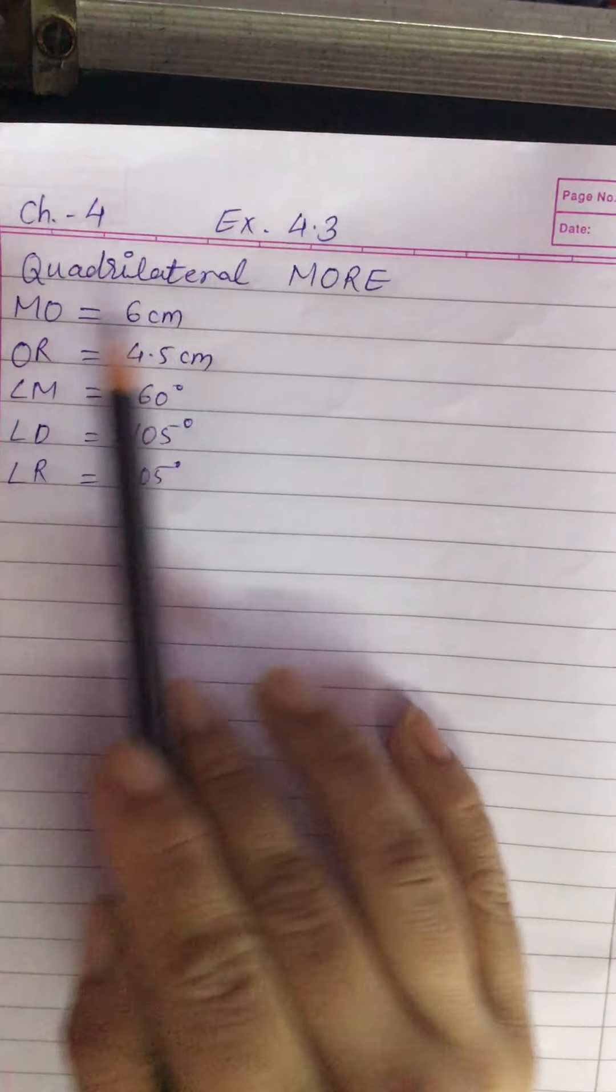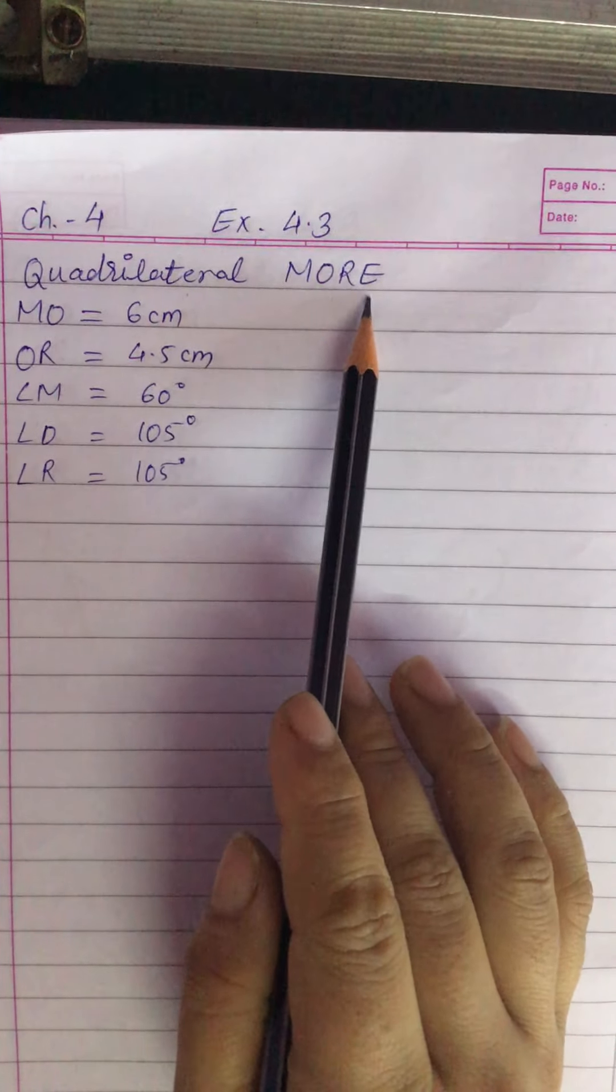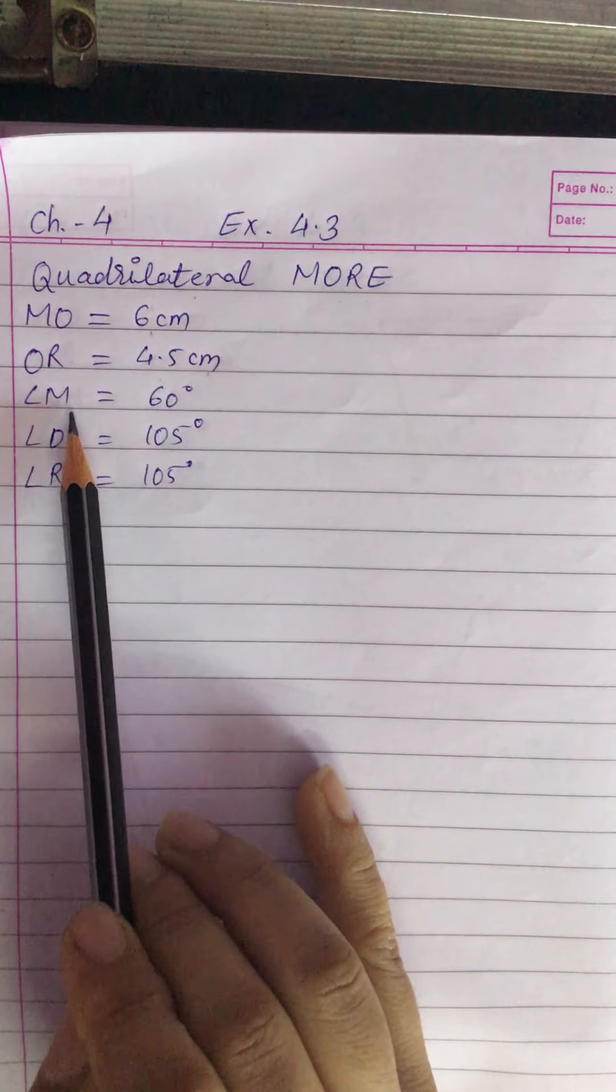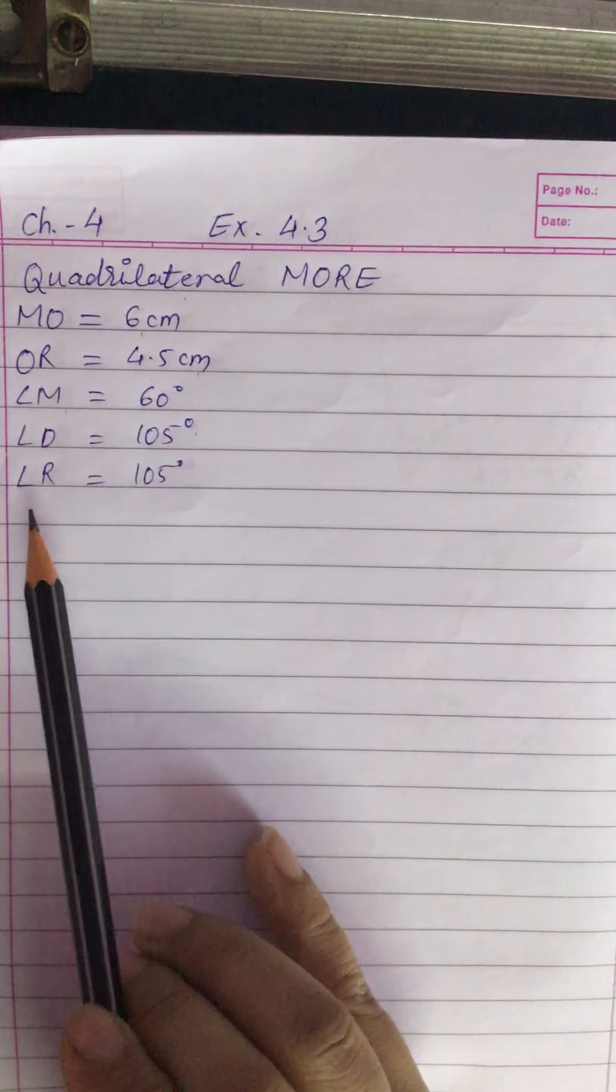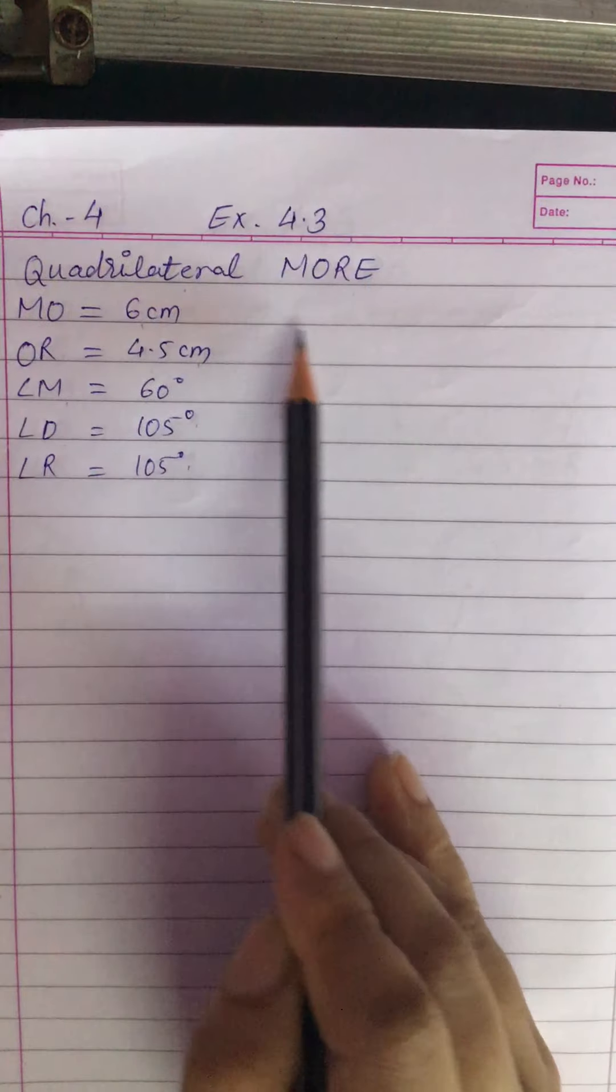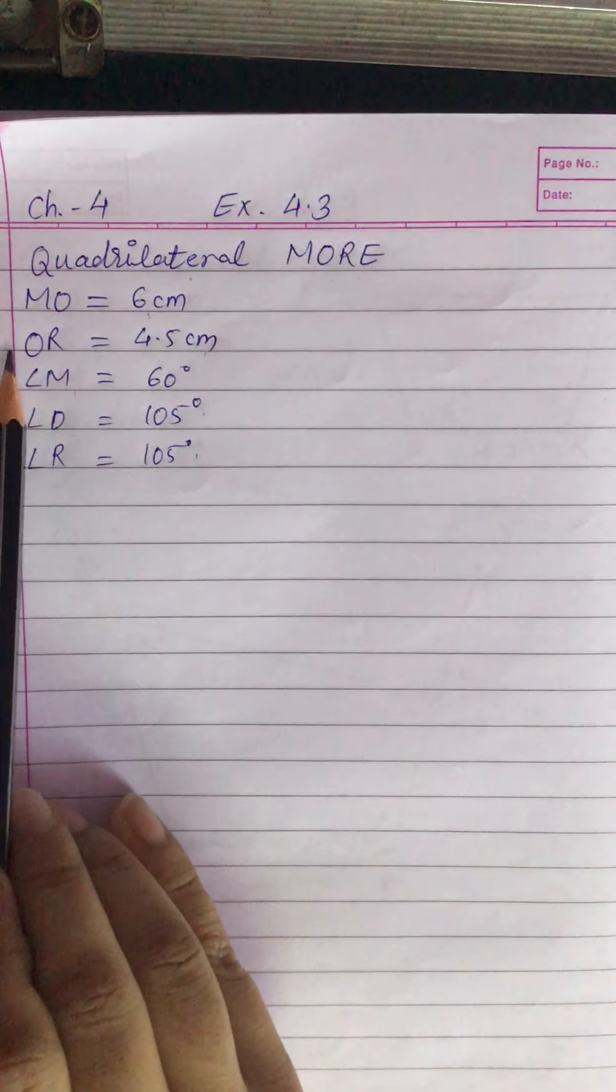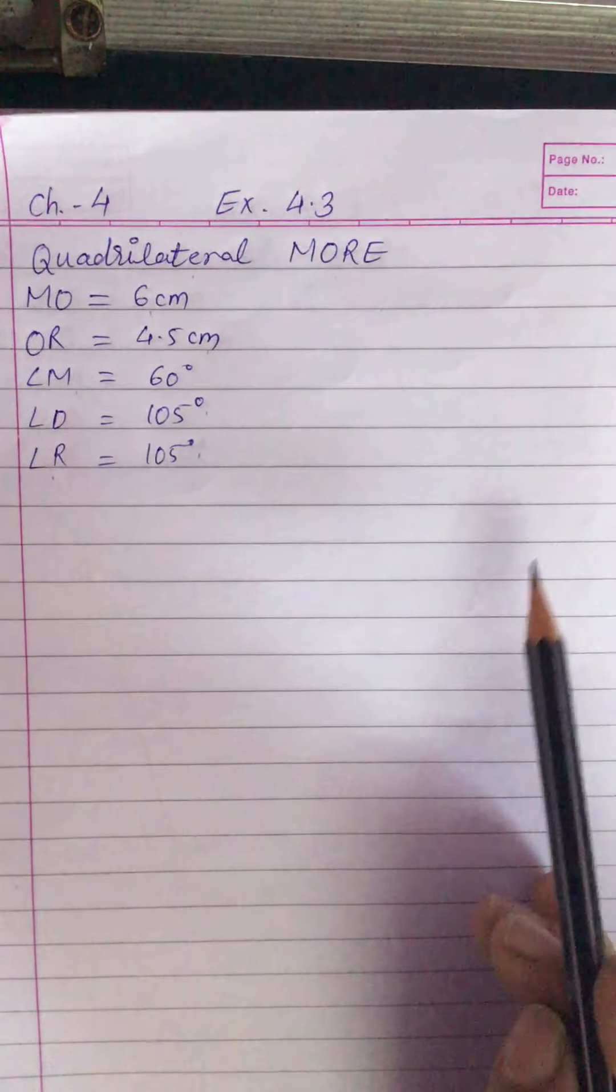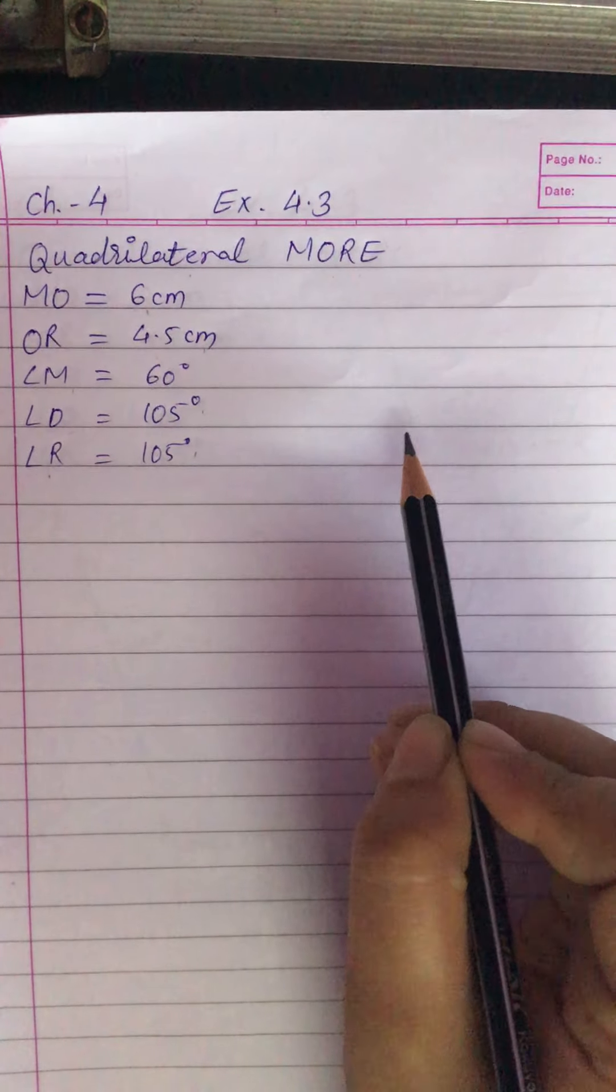Exercise 4.3, Question No. 1: Quadrilateral MORE. Given measurements: MO equals 6 cm, OR equals 4.5 cm, angle M equals 60 degrees, angle O equals 105 degrees, angle R equals 105 degrees. We have to construct quadrilateral MORE. In this question, 2 sides and 3 angles are given. So first we will draw a rough figure of MORE.